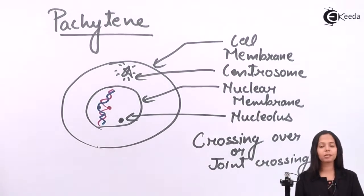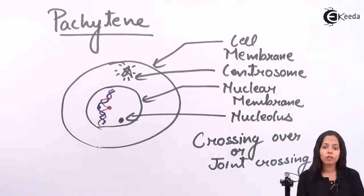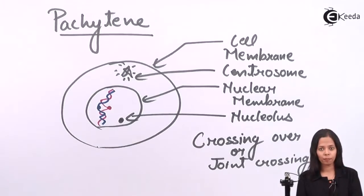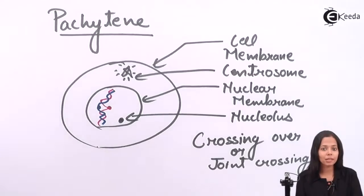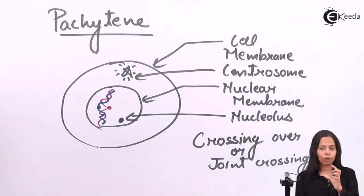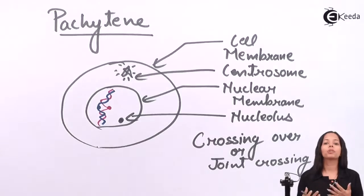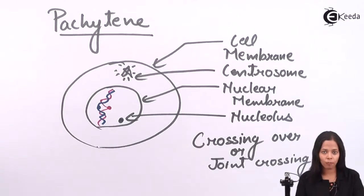In crossing over, exchange of genetic material takes place. Crossing over occurs at a specific spot called chiasmata. You have to remember: the point of crossing over is called chiasmata. If the chromosome is short or small, only one chiasmata is formed. If it is long, more than two or three chiasmatas can be formed.